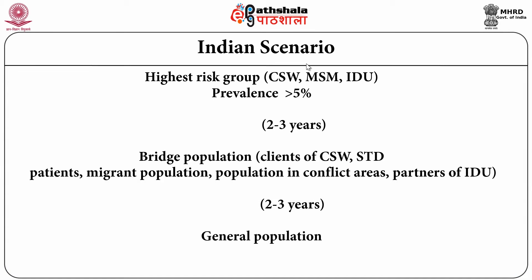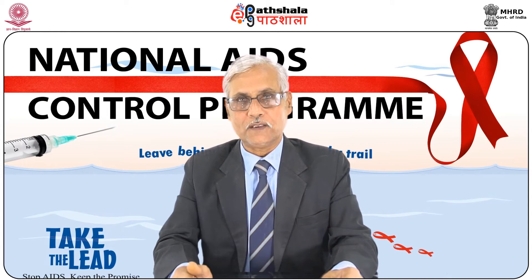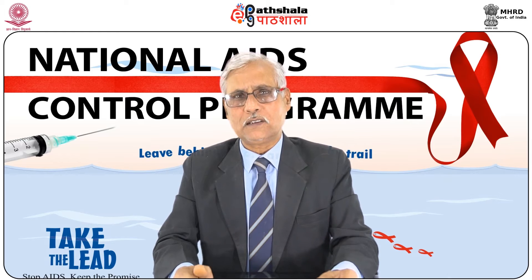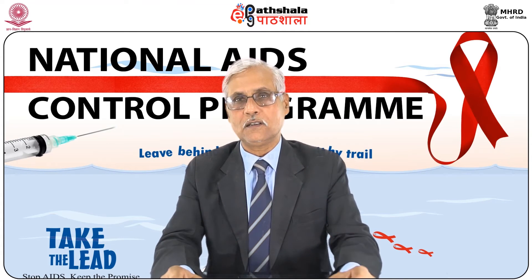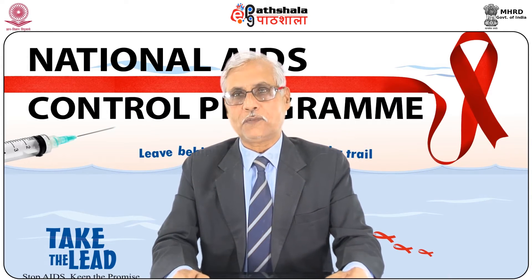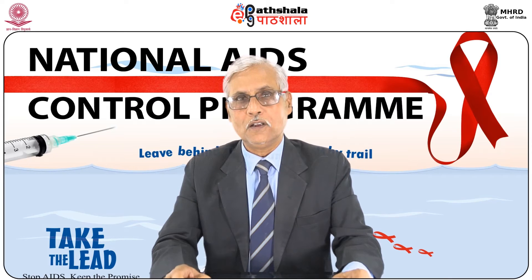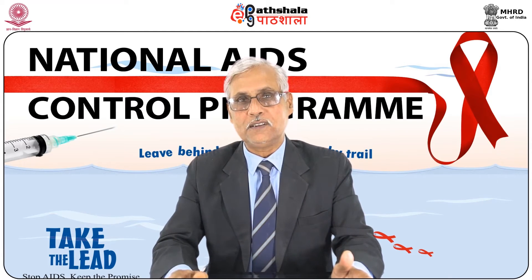This implies that the disease affects the young and productive population of a country. In areas like Africa, where young and productive populations are affected and mortality due to HIV is very high, the country's economy suffers. As far as the Indian scenario is concerned, the highest risk group includes commercial sex workers, men who have sex with men, and intravenous drug users, where prevalence is more than 5%. The bridge population — clients of commercial sex workers, STD patients, migrant population, and partners of IDUs — then carries the disease to the general population after 2-3 years.